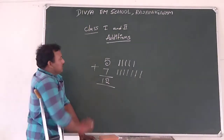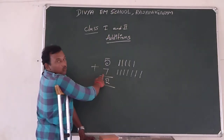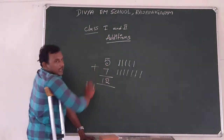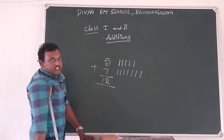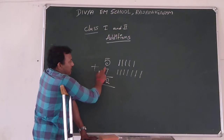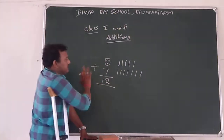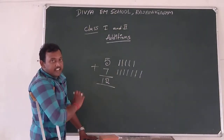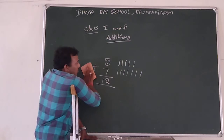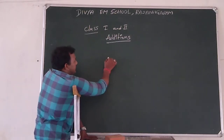Understood all of you? Single digit addition means only one number is here. One number — you can add one number to one number. This is single number, this is single number. This is called single digit addition. Here we add 5 to 7. When we add 5 to 7, the result is 12. We can do more examples like this.